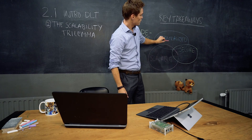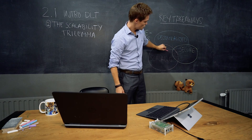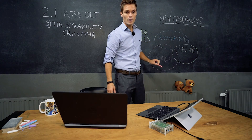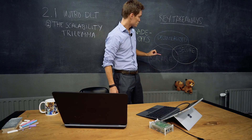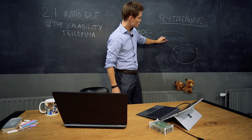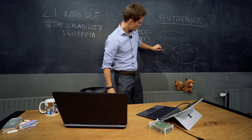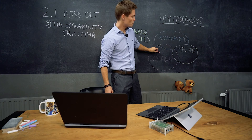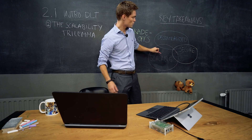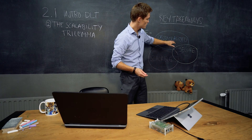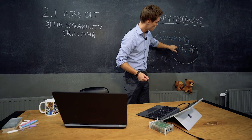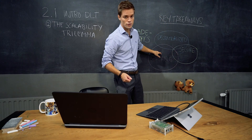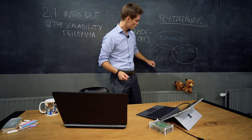We've got three types of properties when we talk about ledgers: decentralized, secure, and scalable. As mentioned before, it's just like being a consultant — it's either cheap, high quality, or fast.